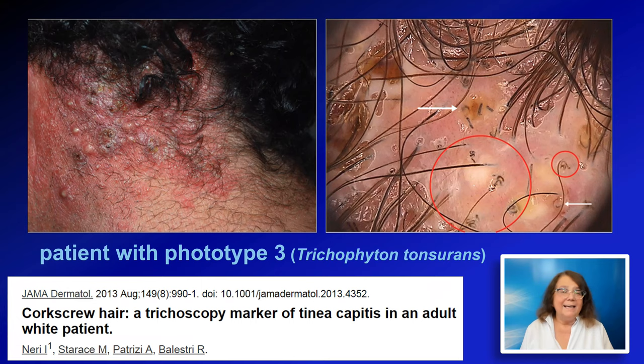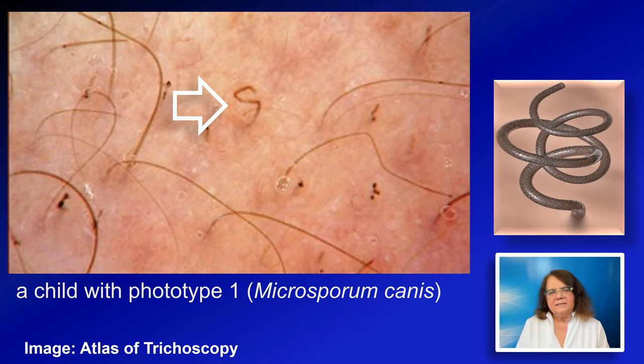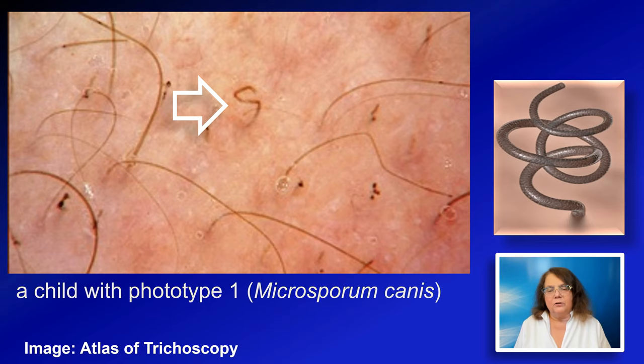As mentioned, corkscrew hairs in patients with lighter skin phototypes are quite rare. There was even a case report published in JAMA Dermatology describing an adult white patient who had tinea capitis manifesting with corkscrew hairs on trichoscopy. In our geographic area, where we have mainly patients with lighter skin phototypes, we may see some structures resembling corkscrew hairs, but this is far from what is described in the literature.